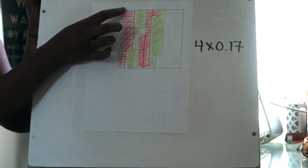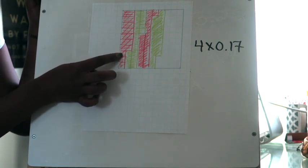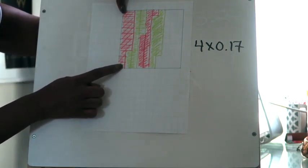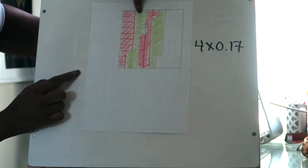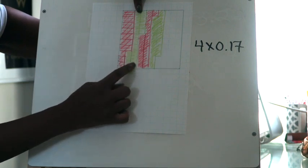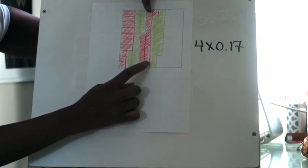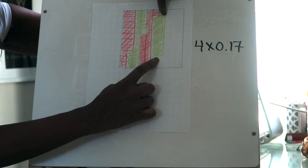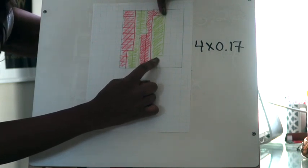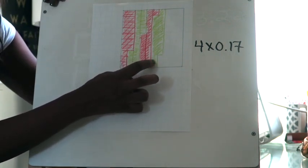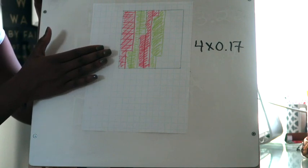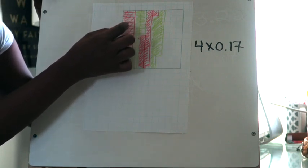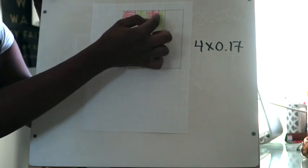In class today we talked about coloring each group a different color so you can tell one group from the next when counting the total. So this first section of red is my first group of 17 hundredths. The green section is my second group of 17 hundredths. The second red section is my third group, and the second green section is my fourth group of hundredths.